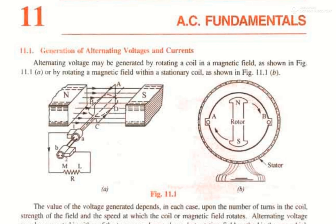Alternating voltages may be generated by a rotating coil in a magnetic field, as shown in figure A — a coil placed between the magnetic field of a magnet and connected to the external circuit via brushes and slip rings. Alternatively, as shown in figure B, AC voltages can be generated by rotating a magnetic field within a stationary coil.